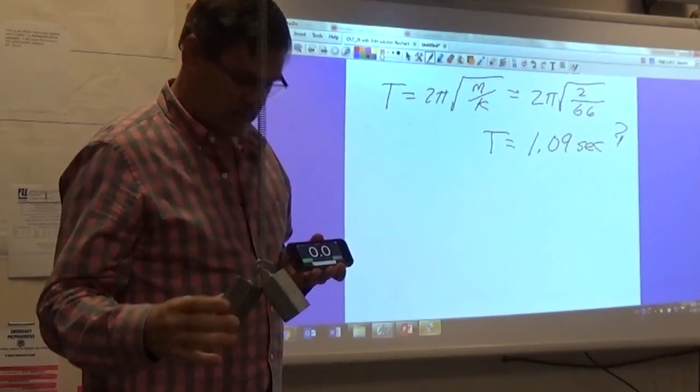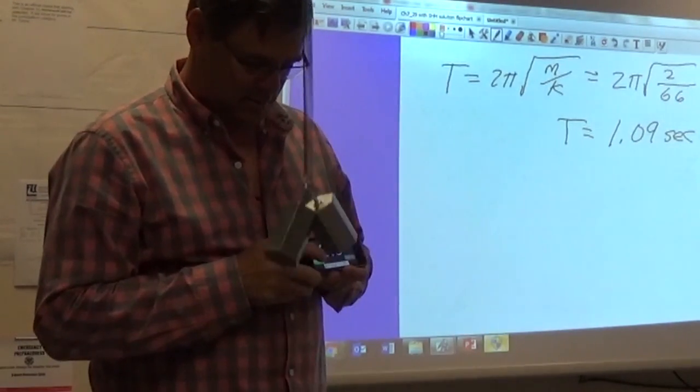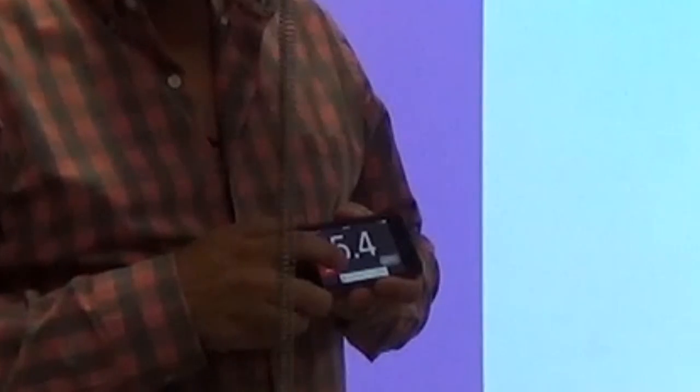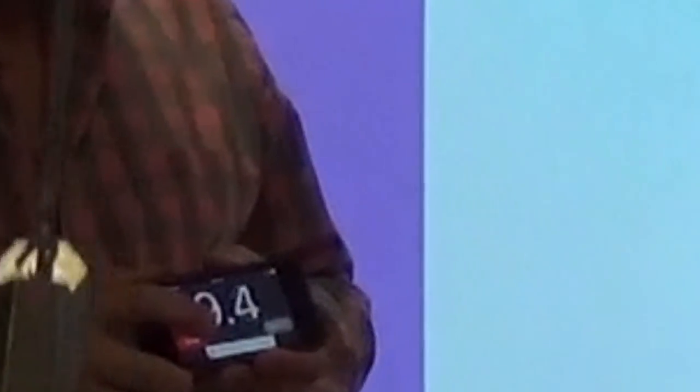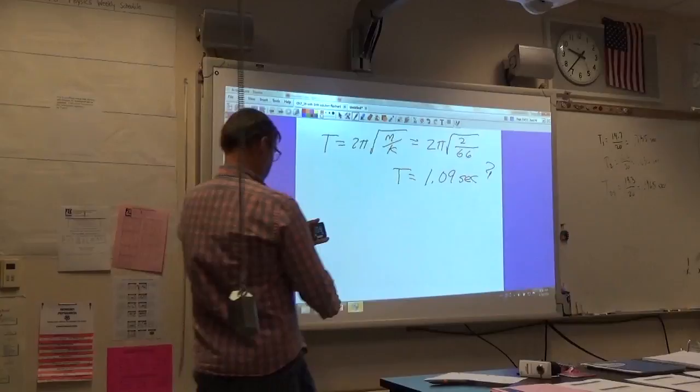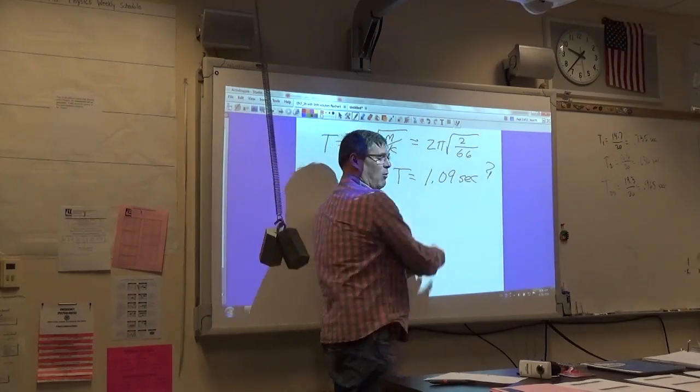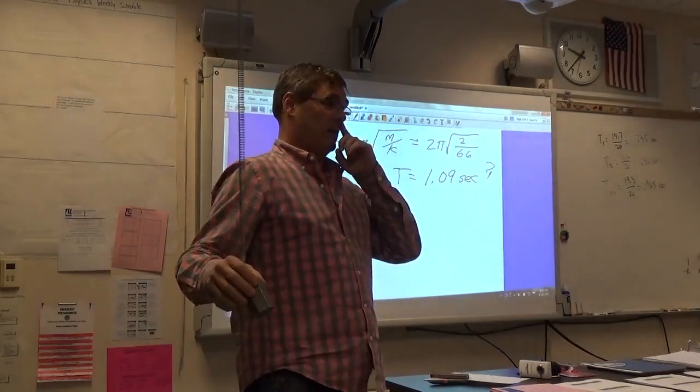On your mark. Get set. Go. One, two, three, four, five, six, seven, eight, nine, ten. Ten point nine divided by ten. One point zero nine. So it works.